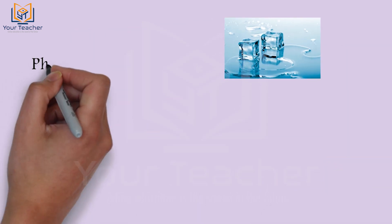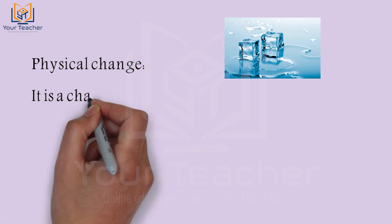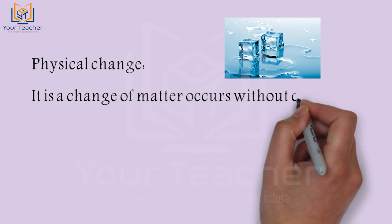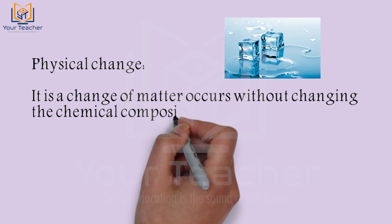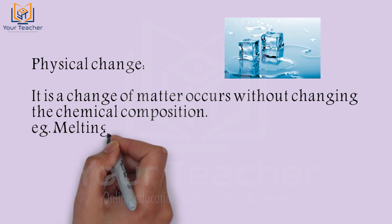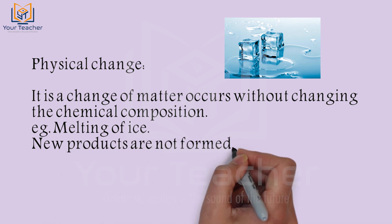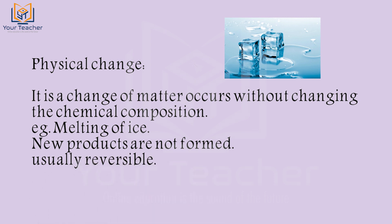There are two types of changes: physical change and chemical change. A physical change is a change of matter that occurs without changing the chemical composition. For example, the melting of ice — the solid form melts and is converted into liquid water. That is a state of matter change, but the chemical composition remains the same, so no new products are formed.